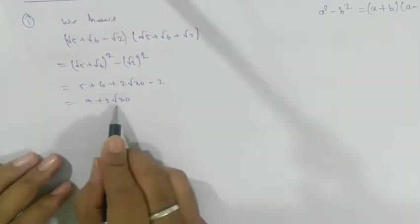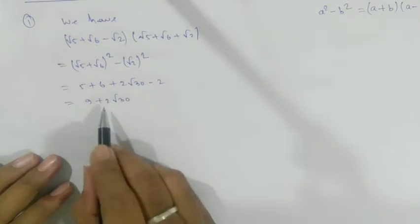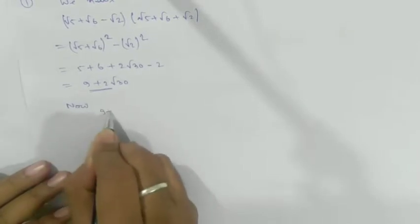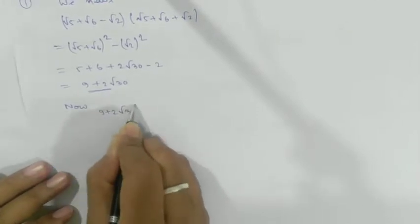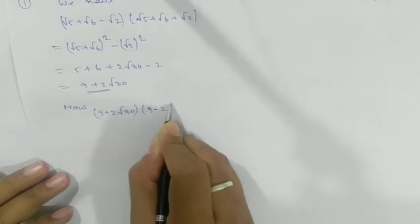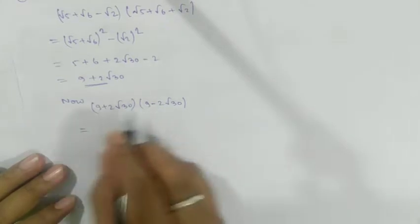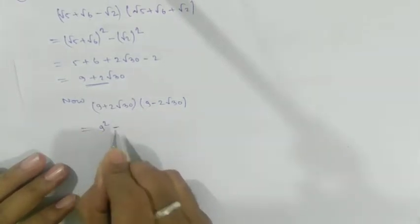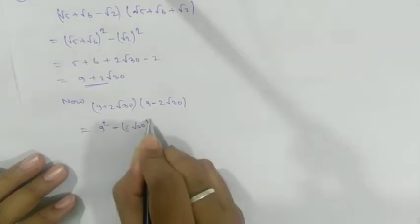Our target is to get a rational result, so we apply the same concept again. Given that we now have a + b form, we need to multiply by (a - b). Solving: a² - b² gives (9)² - (2√30)², which equals 81 - (2√30)².